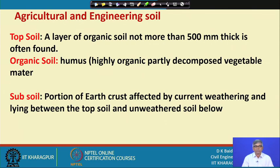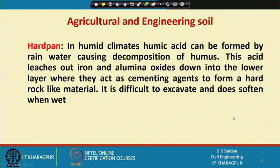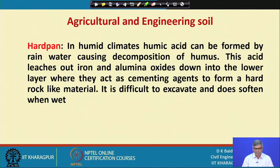This is the subsoil. These are the different ways agricultural people classify, but when we classify soil we definitely have to classify differently, and that we will see later on. At this point there is another layer sometimes present in between called hard pan. In humid climates, humic acid can be formed by rainwater causing decomposition of humus, and this acid leaches out iron and alumina oxides down into the lower layer where they act as cementing agents to form a hard rock-like material. It is difficult to excavate and does not soften when wet.